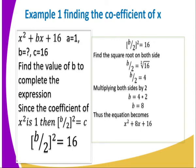Since the coefficient of x squared is one, then I know that b divided by two squared is equal to c. And I have the value of c, so I can solve it from there.